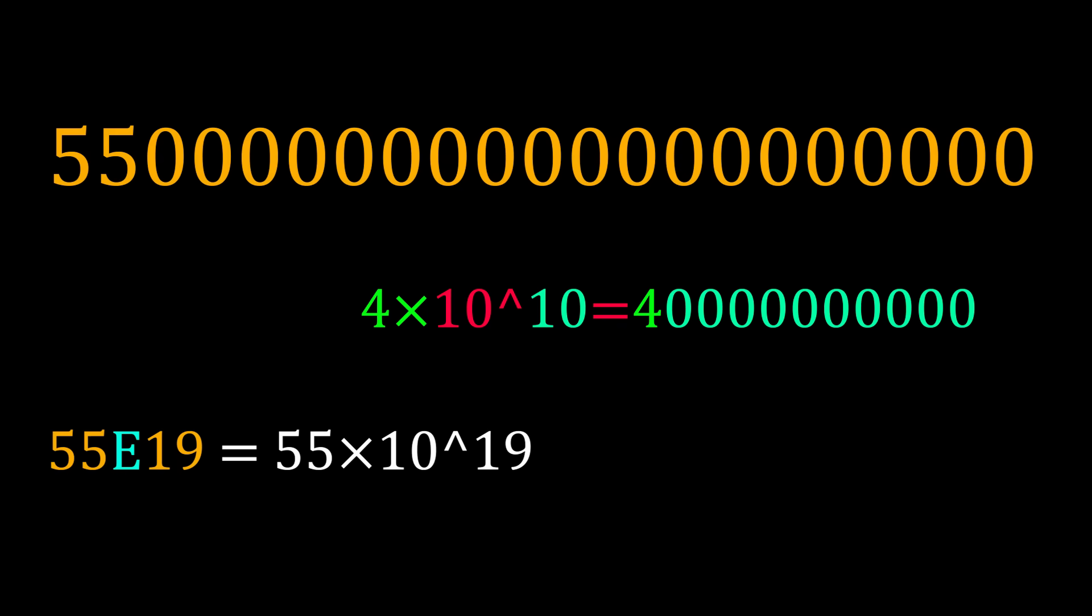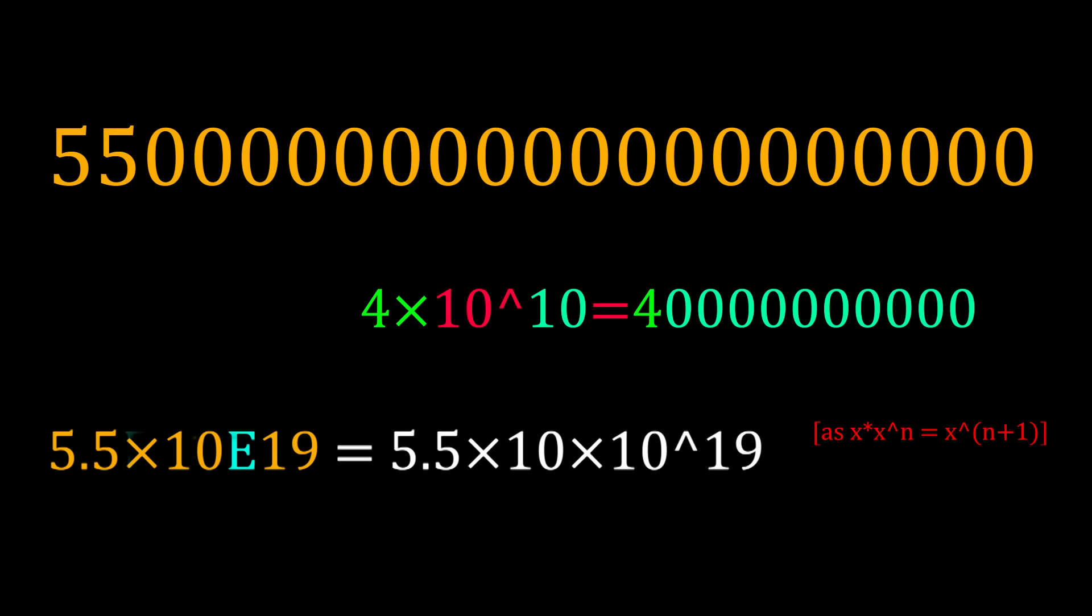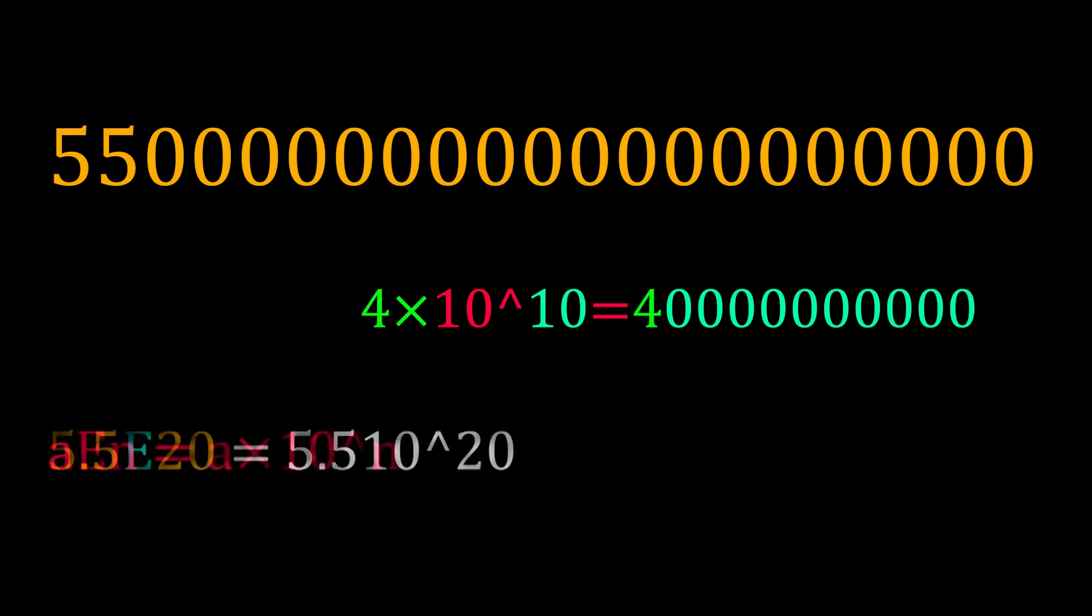Super neat. Also, for more convenience, we can write the 55 as 5.5 into 10 and increase 1 after E. So in general, AEN is just A into 10 to the power of N.